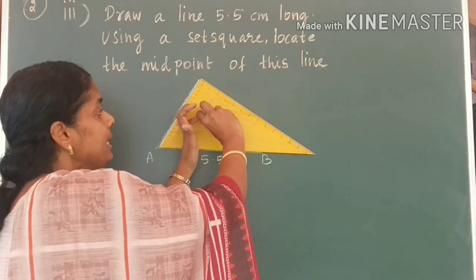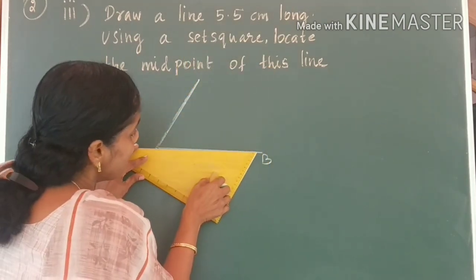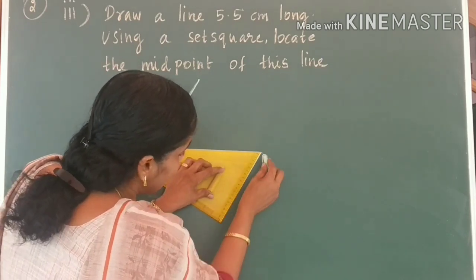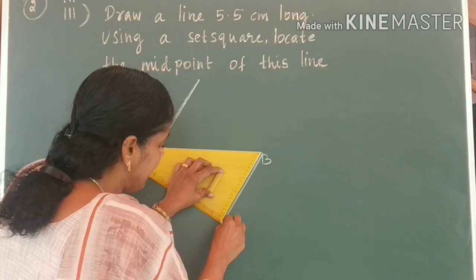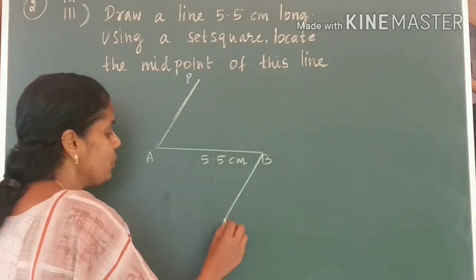Now, what you have to do, take out the set square, keep it at the point B. Keep your set square at the point B and draw a line of the same length. Let me name the points as P and Q.